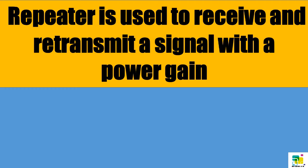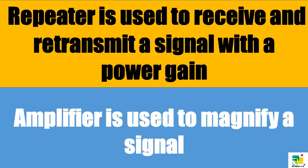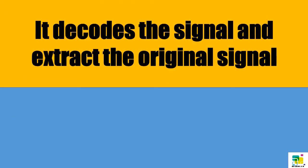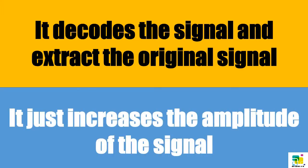A repeater is used to receive and retransmit a signal with a power gain, and it decodes the signal to extract the original signal. Whereas an amplifier is used to magnify a signal and increases the amplitude of the signal.